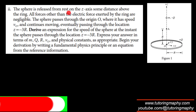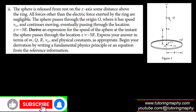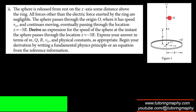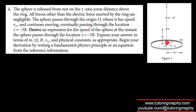The next part says the sphere is released from rest on the Z-axis some distance above the ring. Because of the +Q ring and −Q sphere, the ring pulls the sphere toward it. All forces other than the electric force are negligible. The sphere passes through the origin with speed V₀ and continues moving, eventually passing through the location −3R. We need to find the speed V of the sphere at −3R.